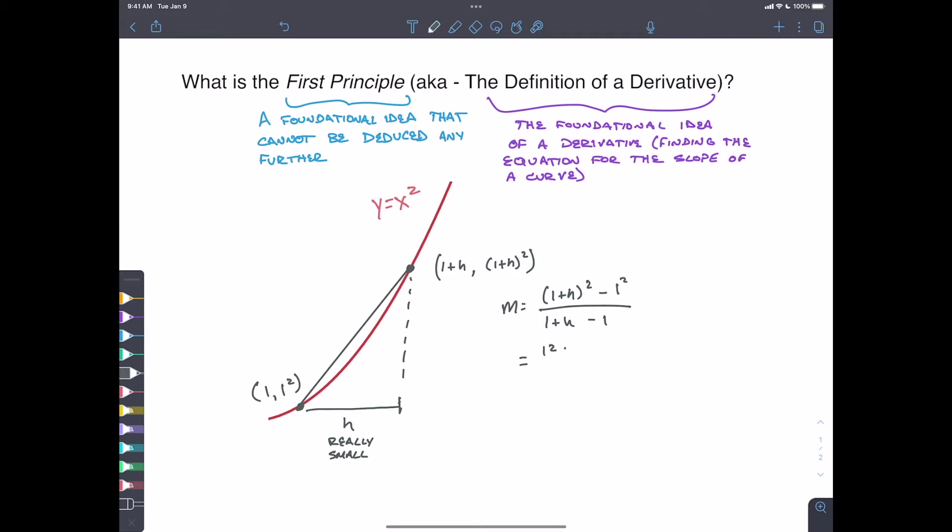But that's going to be one squared plus two times one h plus h squared minus, minus this one right here. So minus one squared. This one squared right here is this here. And this, all of this is the binomial expansion of this piece right there.